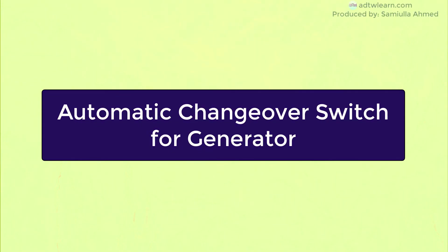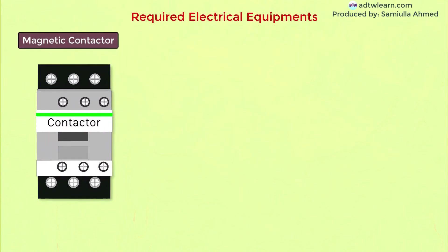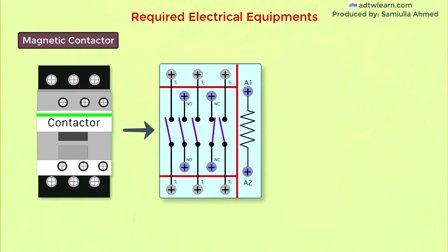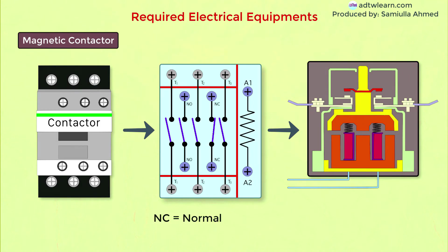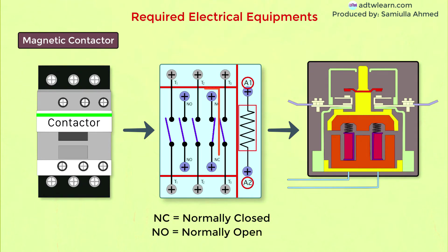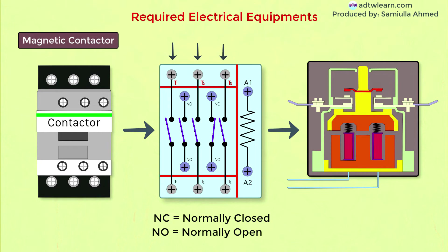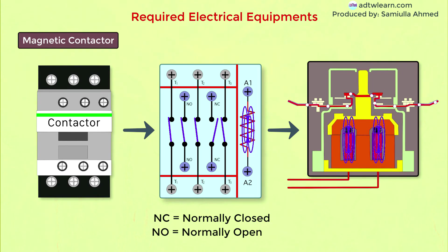For an automatic changeover switch for a generator, the required electrical equipment is a magnetic contactor. This diagram shows the theoretical working of the contactor, and this is the cut section of the contactor. NC means normally closed contact and NO means normally open contact. When coil A1-A2 is not energized, the NC contacts are closed and NO contacts are open. T1, T2, and T3 are also normally open contacts.